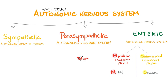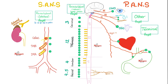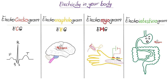The enteric nervous system is subdivided into the myenteric plexus for motility and the submucosal plexus for secretions. Superimposed on the enteric nervous system is sympathetic or parasympathetic. Sympathetic is fight-or-flight — if I'm running from a tiger, there's no time to digest, so sympathetic tells the enteric nervous system to decrease motility and secretion. Conversely, in parasympathetic rest-and-digest mode, the parasympathetic fibers tell the enteric nervous system to boost motility and secretions.